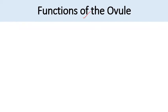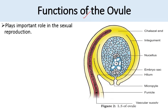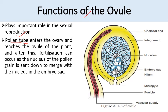Now the function of the ovule: the ovule plays a very important role in sexual reproduction in plants, making fertilization easy. The pollen tube enters the ovary, reaches the ovule, and fertilization takes place as nuclei from the pollen tube are delivered into the embryo sac. One male gamete fuses with the egg, and the second fuses with the secondary nucleus to form the triploid endosperm — this is the double fertilization process. This is an essential function that facilitates sexual reproduction in higher plants.